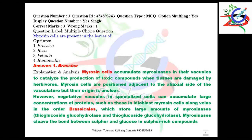Question number three: myrosine cells are present in the leaves of which plant? It is a clear-cut question — myrosine cells are found in the leaves of Brassica. Basically, myrosine cells accumulate myrosinase enzyme in their vacuoles to catalyze the production of toxic compounds when tissues are damaged by herbivores.